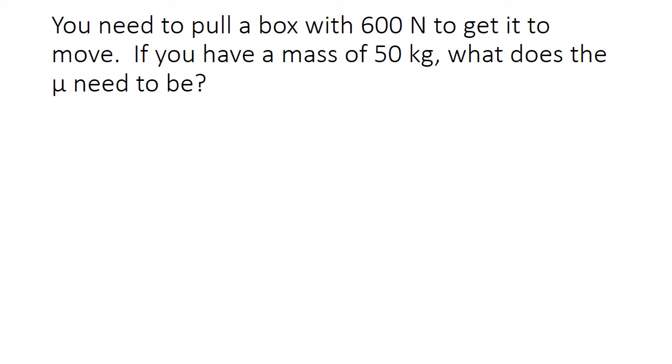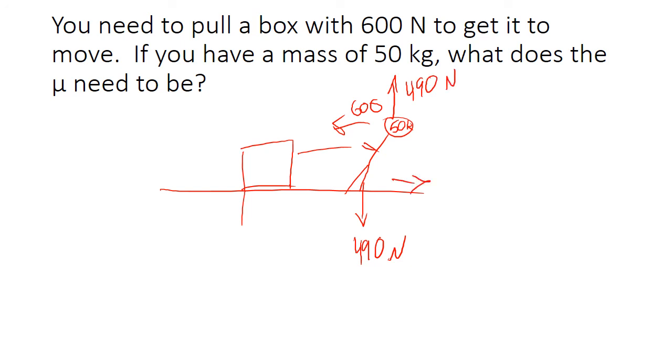For this one, you need to pull a box with 600 newtons to get it to move. If you have a mass of 50 kilograms, what does the μ need to be? Here's our box. We need to pull this one with a force of 600, which means it's pulling us this way. Since we weigh 50 kilograms, that means we weigh 490 newtons, and this is going up at 490 newtons. Our force of friction is going to pull us that way and has to be more than 600.